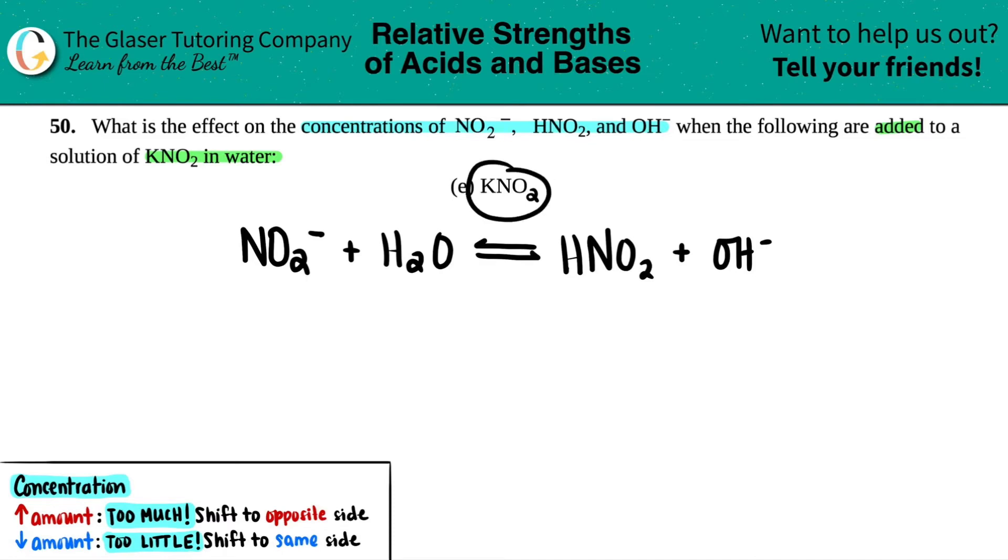Now we're adding KNO2. So first we're going to break down this compound. I noticed that this is a salt because you have a metal and some non-metals. A salt is the same thing as saying ionic compound. So we have KNO2. The break would be between the metal and the polyatomic. So I have K plus and I have NO2 minus.